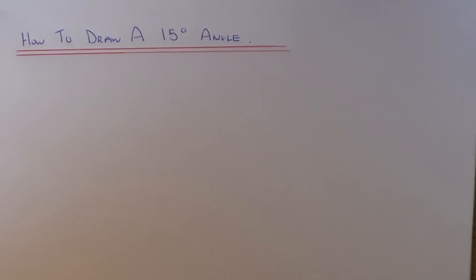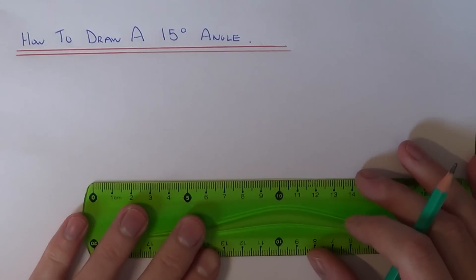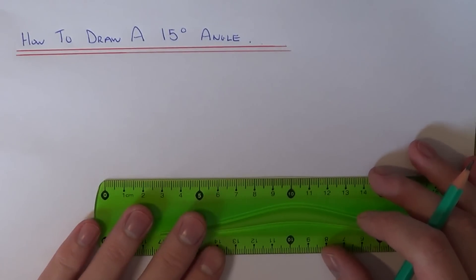Hi, today I'm going to show you how to draw a 15 degree angle using a compass and a ruler. First, start with a line on your page. You can make this line about 6cm.